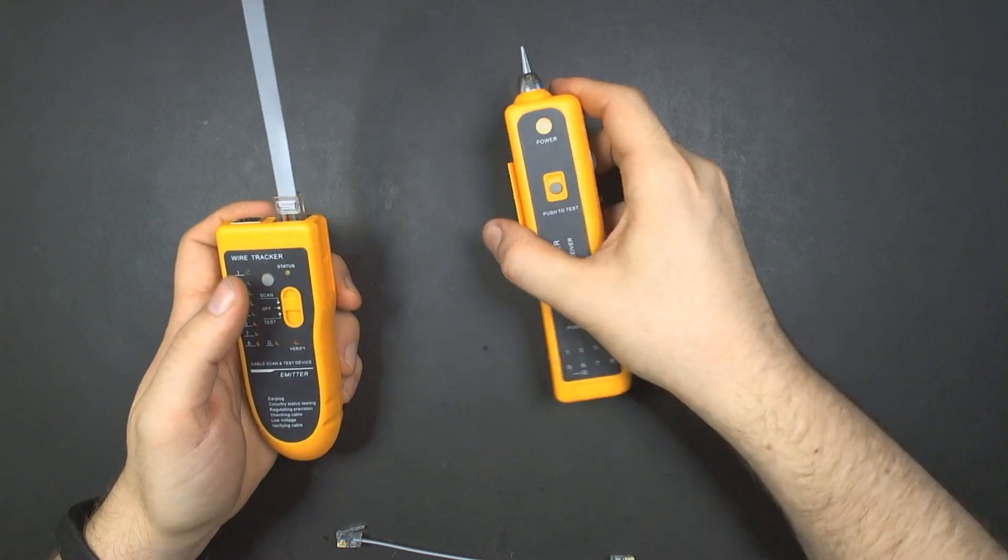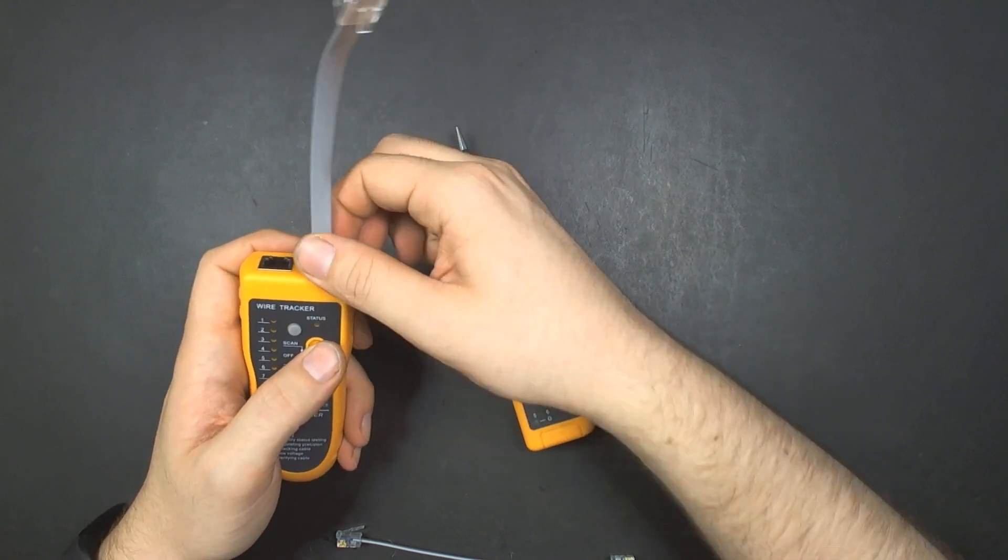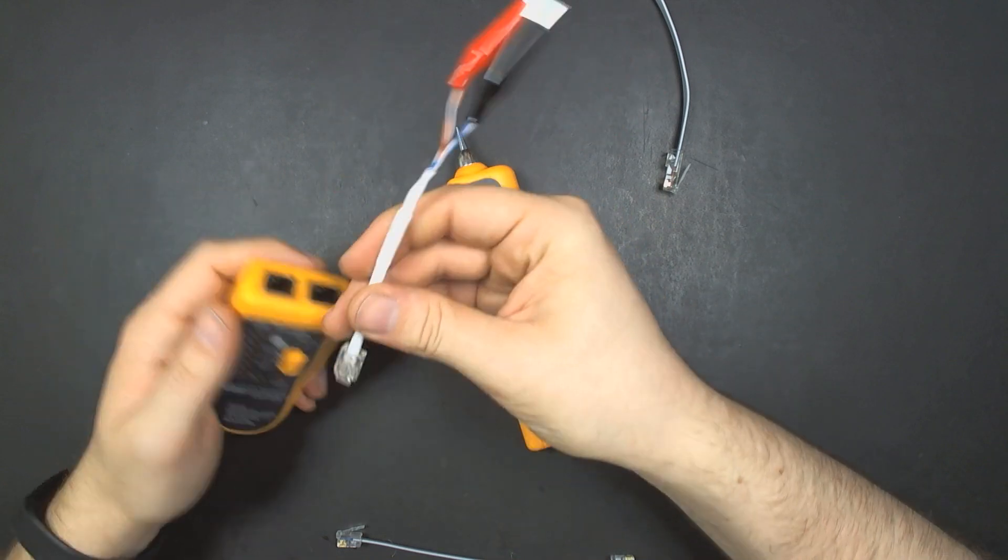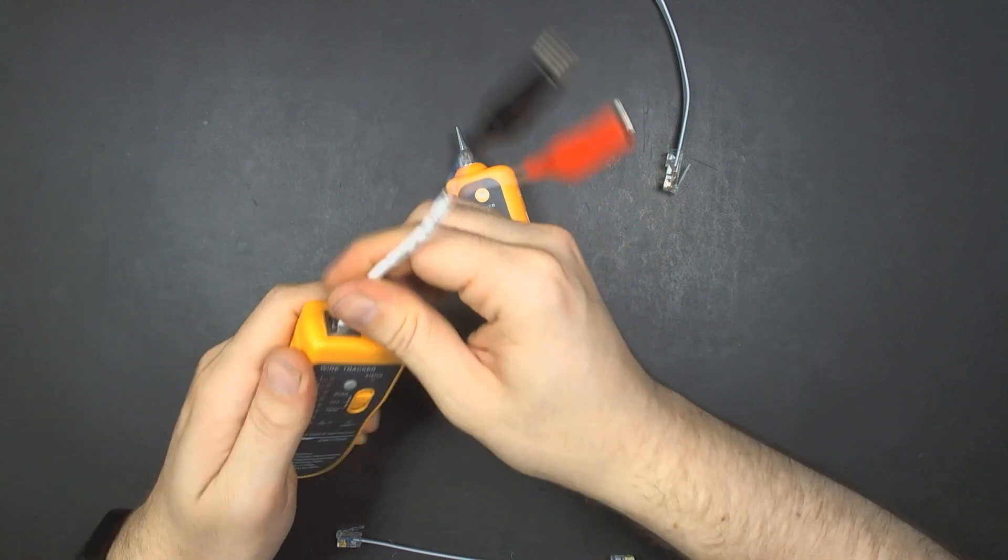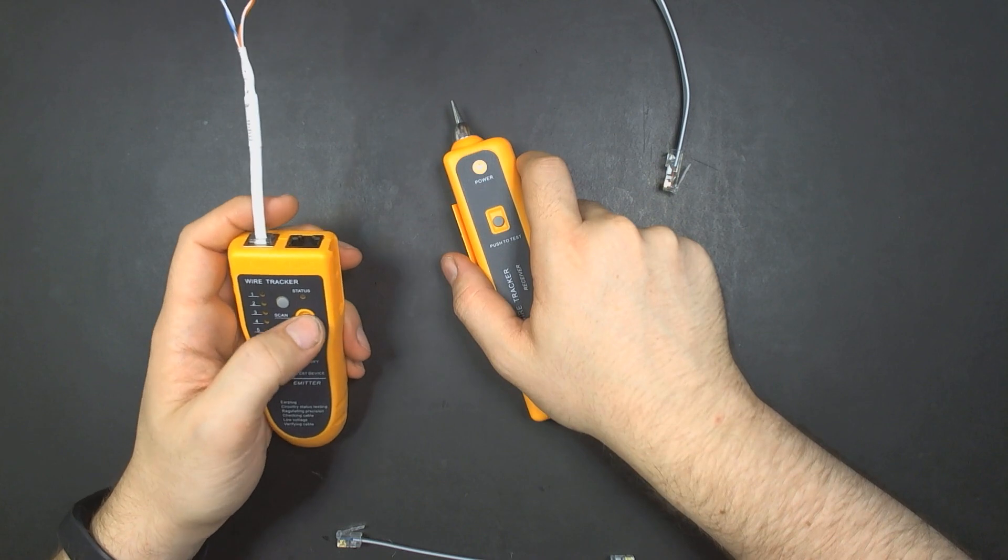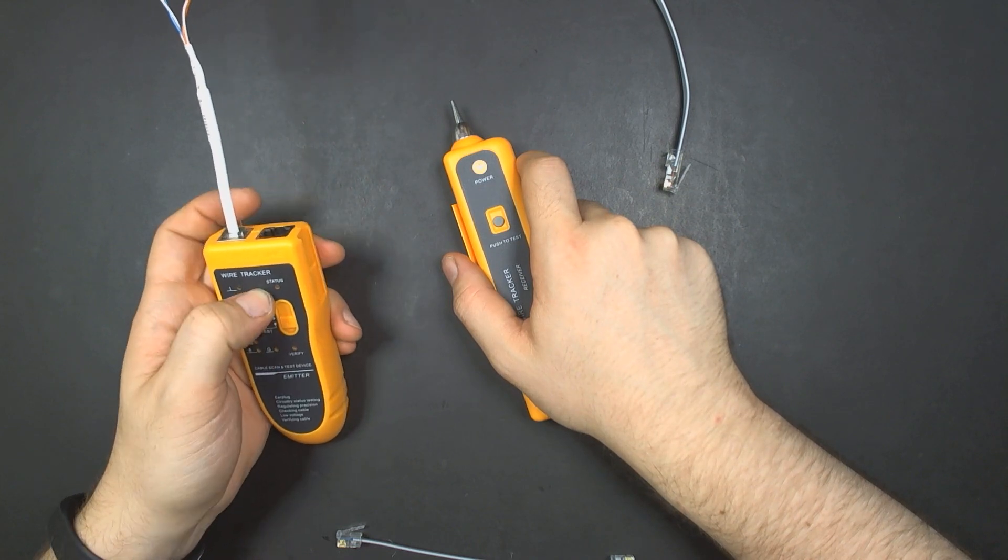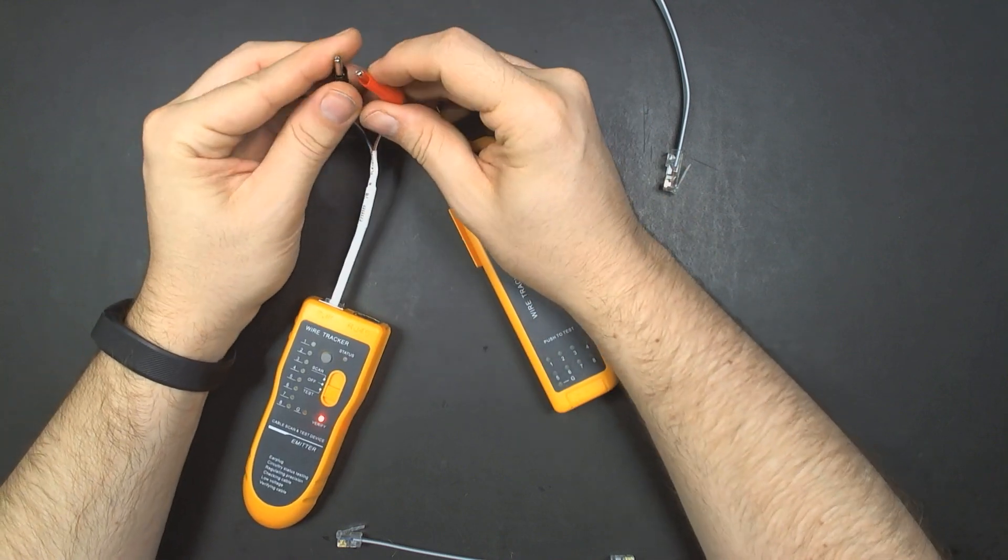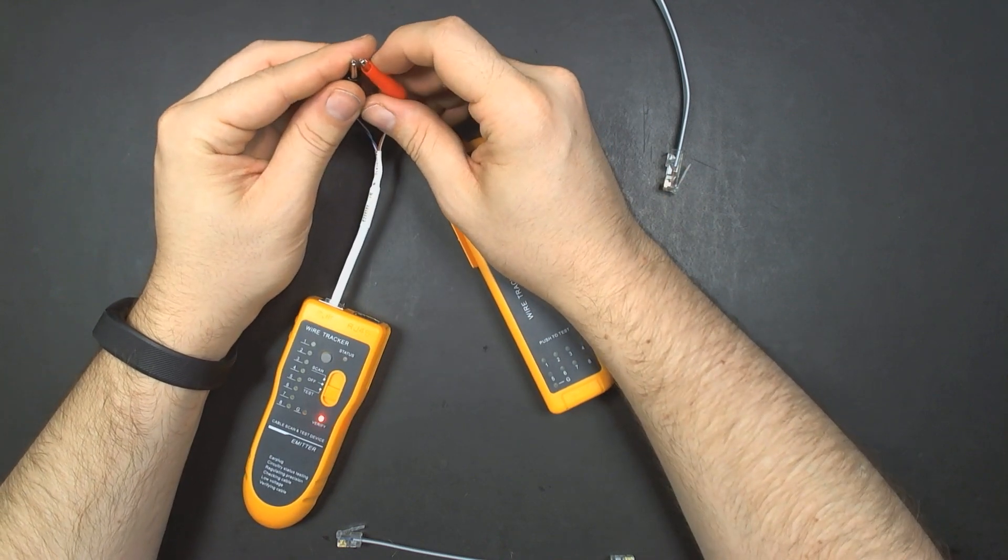That is this little twisted pair alligator clips and the RJ11. If you put this on test mode and hold down the button, it's going to give you a continuity meter here. You can easily test for shorts.